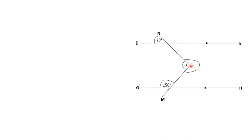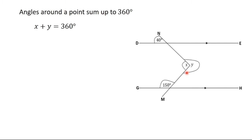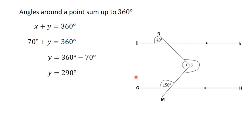Now we need to find Y. You can see that X and Y are angles around a point. Angles around a point add up to 360 degrees, as we established in the first video. So X plus Y equals 360 degrees. Since X equals 70 degrees, Y equals 360 minus 70, which gives us 290 degrees. So we have found both X and Y.